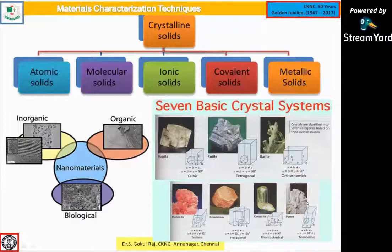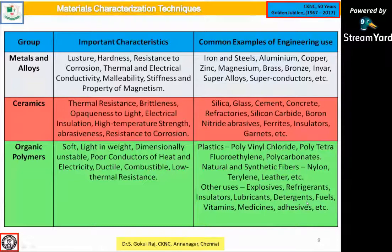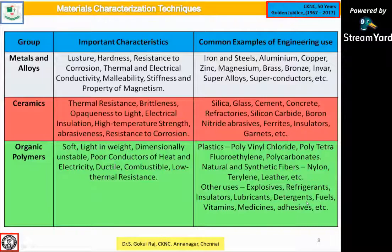When we classify materials, we have metallic alloys such as iron, steel, aluminium, copper, zinc, magnesium, brass, and super alloys. Ceramic materials are thermally resistant and brittle, used for high temperature applications — examples include silica, glass, cement, concrete, refractory, silicon carbide, and boronite. Organic polymers include polyvinyl chloride for refrigerant applications, lubrication, fuels, medicines, and adhesives. All these compounds play a role in these sub-classifications.